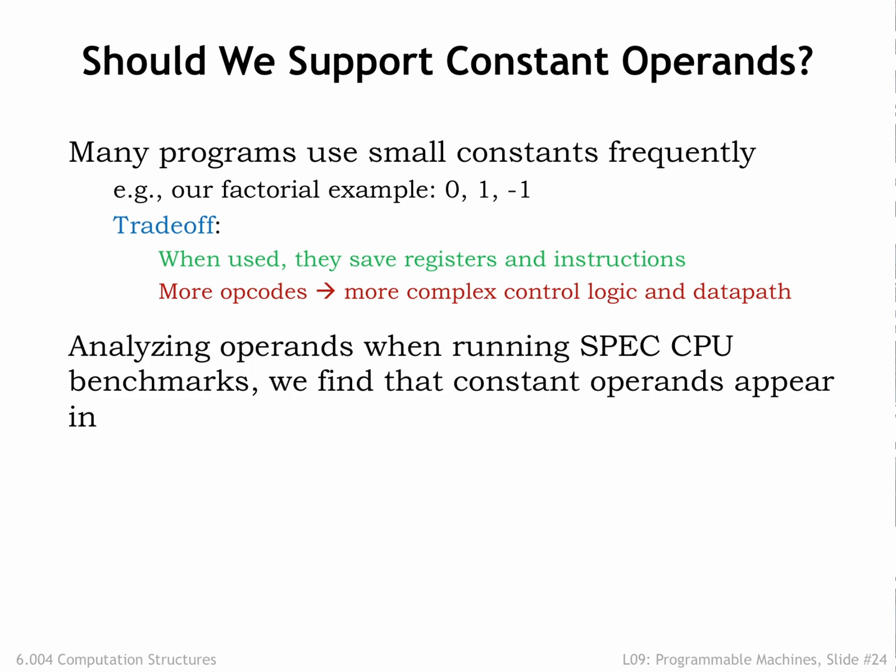Our strategy is to modify our benchmark programs to use the ISA augmented with this feature and measure the impact on a simulated execution. We're not so much interested in simply looking at the code — instead, we want to look at what instructions actually get executed while running the benchmark programs. This takes into account that instructions executed during each iteration of a loop might get executed thousands of times, even though they only appear in the program once.